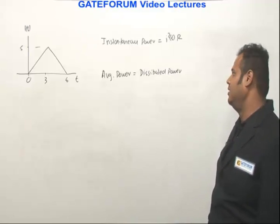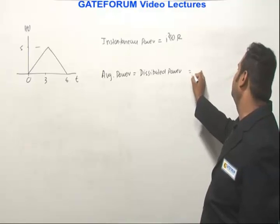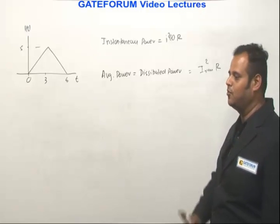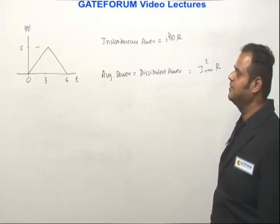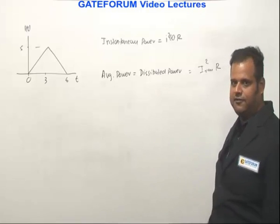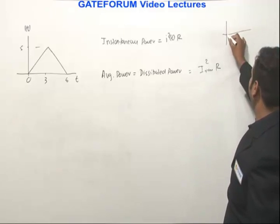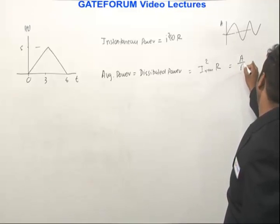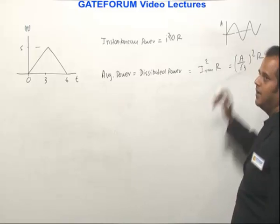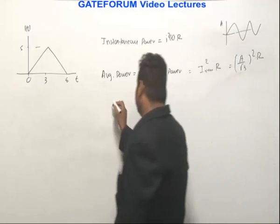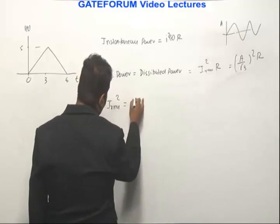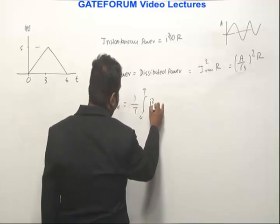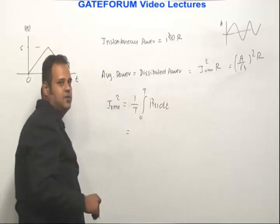The formula to calculate average power is I_RMS² × R. Generally in most competitive exam questions the waveforms are periodic. But if you notice, this is not a periodic waveform. If the question had given a periodic triangular waveform with amplitude A, the answer would have been (A/√3)² × R. The formula for I_RMS² is (1/T) × ∫₀ᵀ I²(t) dt.